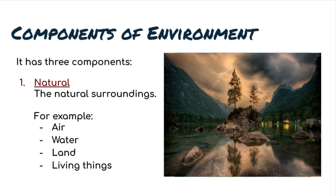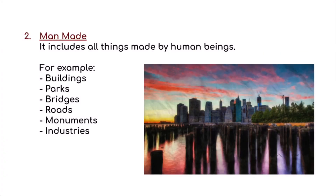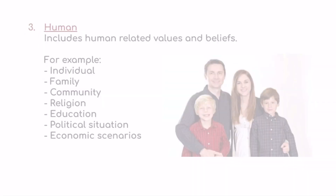Our environment consists of three components: natural, man-made, and human. The natural environment consists of all the natural surroundings, for example air, water, land, and all the other living things. On the other hand, man-made environment consists of all the things that are made by human beings, for example buildings, parks, bridges, roads, monuments, and all the industries.